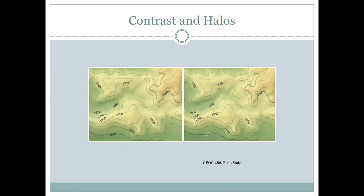One common place that we use halos is when we label contours. Contours tell us the elevation of the terrain and typically sit right on top of the contour they're describing. However, the problem with that is the contour line actually crosses right through the contour label itself, and in some cases that can make it difficult to read — for example, we might not know if that's 1,800 or simply 1,000. But if we put a halo around the text — in this case a lightish yellow halo — it looks almost invisible in the yellow areas, barely visible in the more orange areas, and most apparent in the greenish areas. Now we can clearly see that this contour is labeled as 1,800.